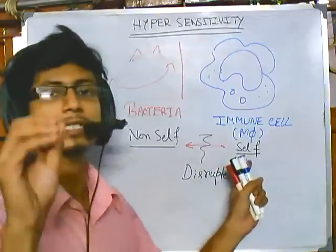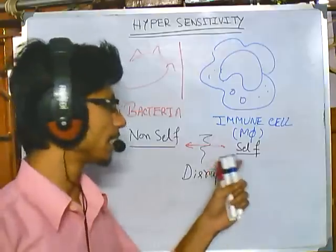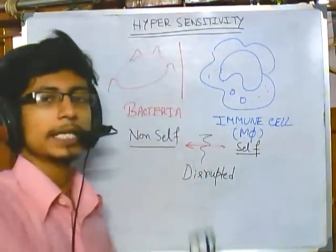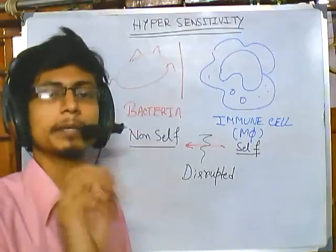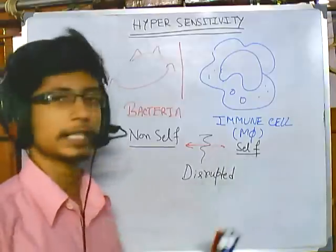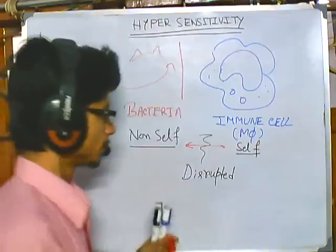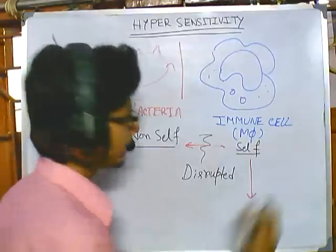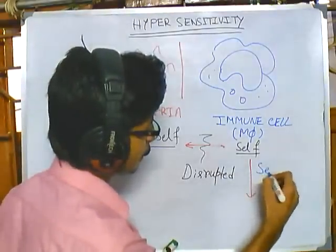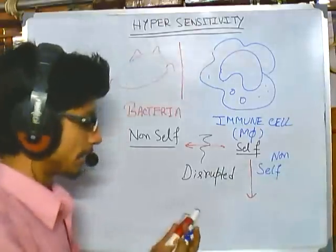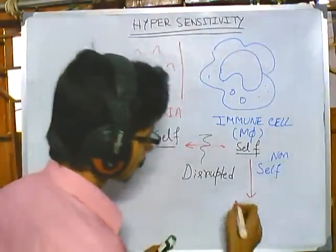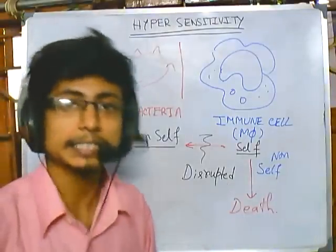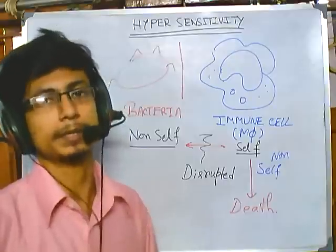On the other hand, there is another scenario where the immune cell is unable to recognize self proteins or self peptides. In this condition, it recognizes self as non-self and starts secreting chemical mediators that degrade self molecules. Instead of thinking it is self, it thinks it is non-self and starts killing the self material. This situation is called autoimmunity or autoimmune disease.